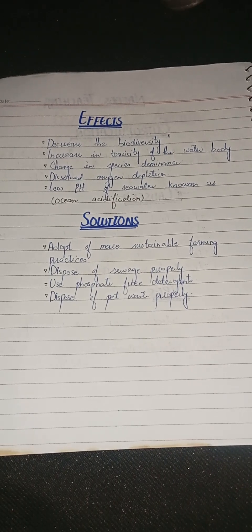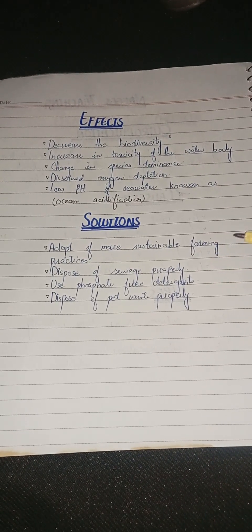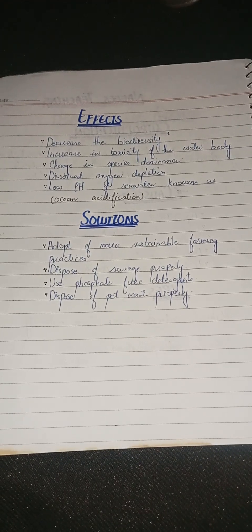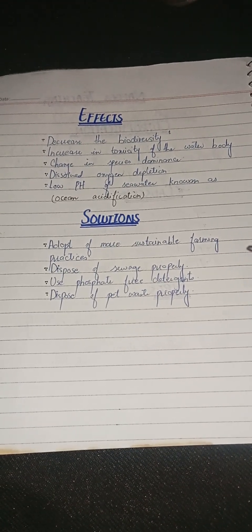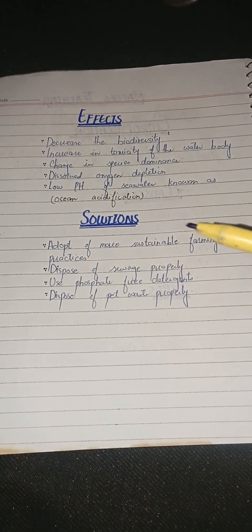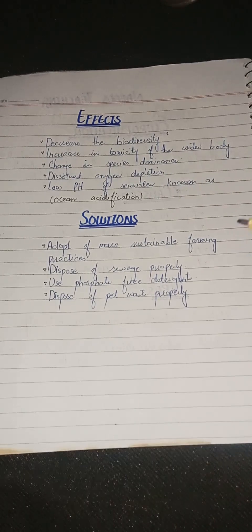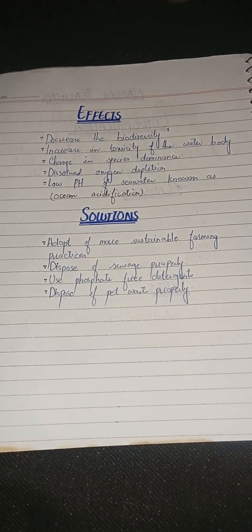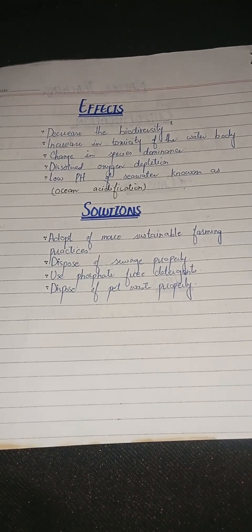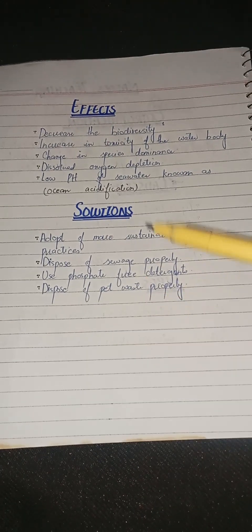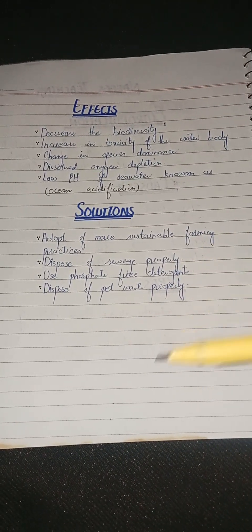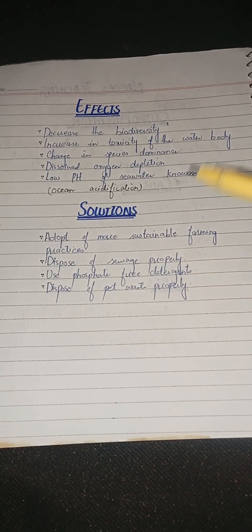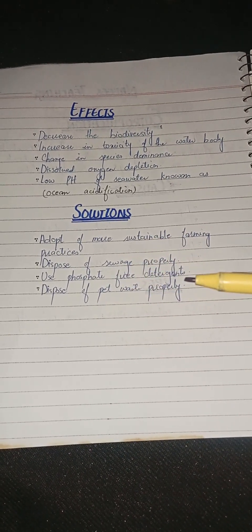Now we will talk about solutions. We should adopt more sustainable farming practices — the farming process should be sustainable. We should also properly dispose of sewage — sewage water should be disposed of properly. Additionally, phosphate-free detergents should be used in homes and industries to reduce the amount of phosphorus entering the water.